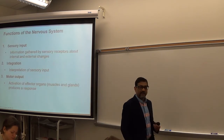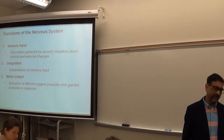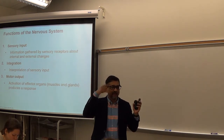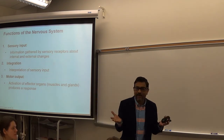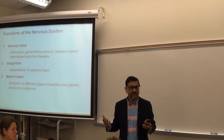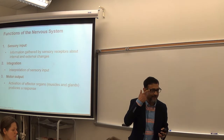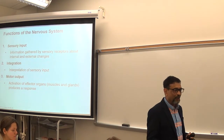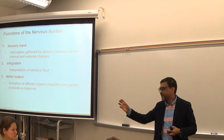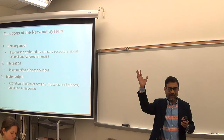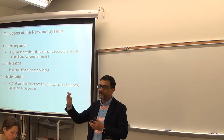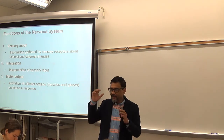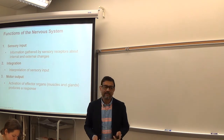Your nervous system performs thousands of functions. You see things with your nervous system, you listen with your nervous system. If I ask you how you see things, you might say with your eyes — but actually, you see with your brain. Your eyes and ears just receive the signal from outside and send it to the brain. Your brain actually gives you the perception. Everything is processed in the brain.